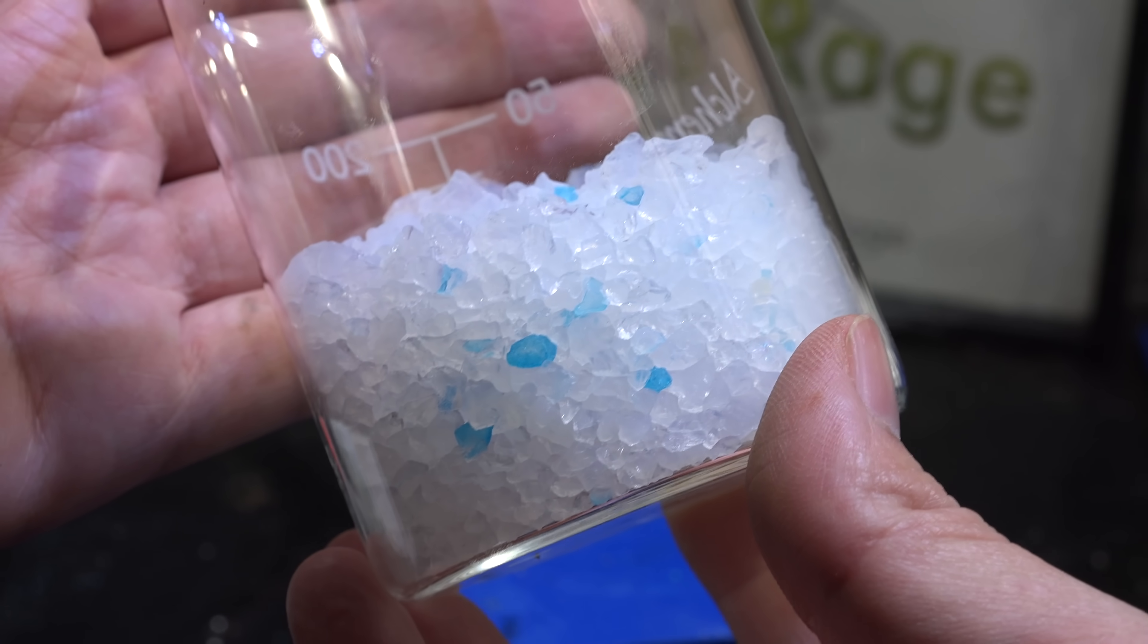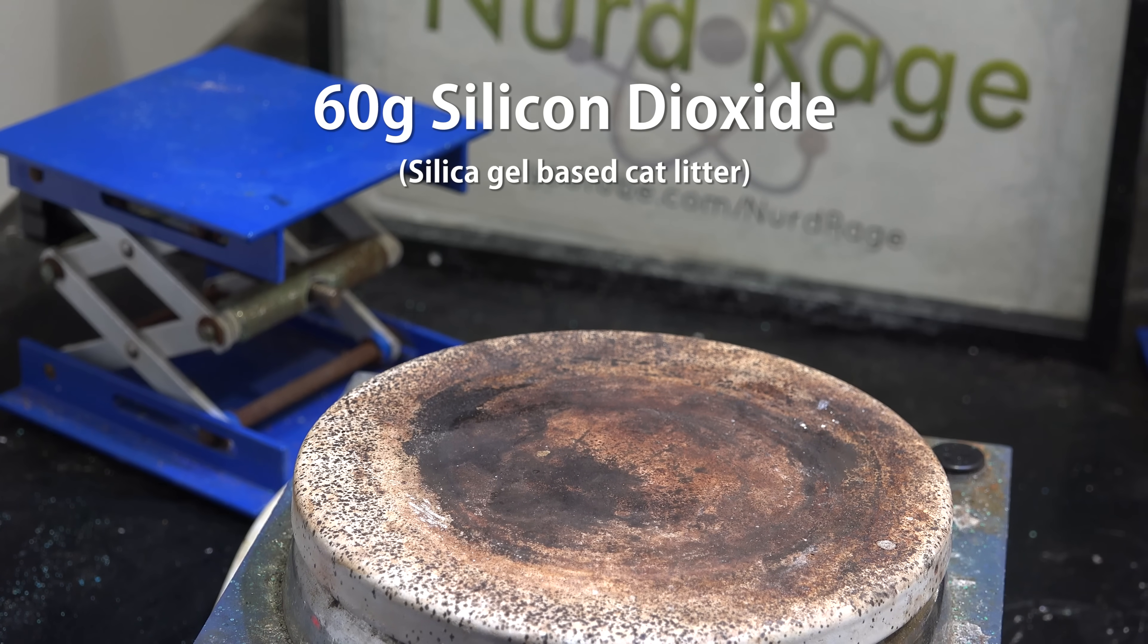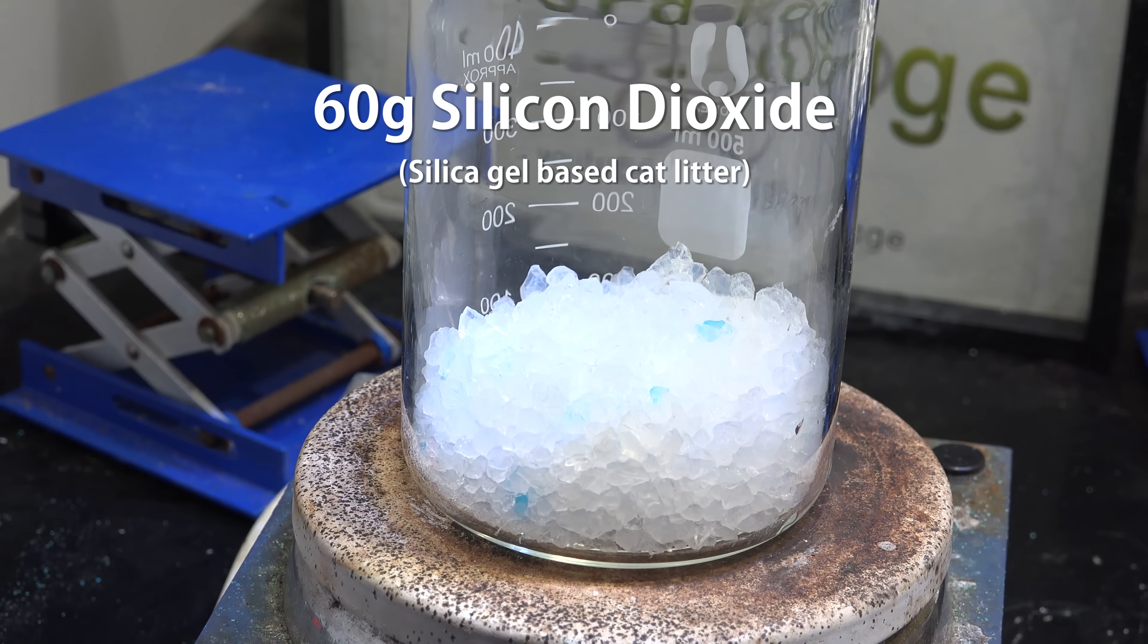For most of my work none of this will be an issue, but if you're doing sensitive chemistry you might want to pick out the blue particles and just retain the white ones. Now to make sodium silicate we start with about 60 grams of silica gel based cat litter.